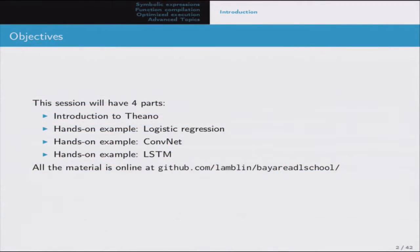There are going to be four main parts. First, these slides and an introduction about the concepts of Theano. There is a companion IPython notebook on GitHub with all the code snippets from these slides so you can run them at the same time. Then a more hands-on example applying logistic regression on the MNIST digit dataset. And if we have time, a ConvNet using the basic LeNet architecture, and an LSTM for character-level text generation.